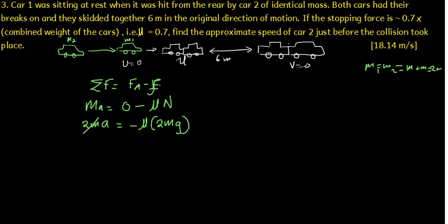Notice that the 2M and the 2M there cancels. And so acceleration will just be equal to negative mu. They have given us 0.7, G is 9.8, and so the acceleration is going to be equal to 0.7 multiplied by 9.8, and that is negative 6.86 meters per second squared. This is the acceleration at which they were moving, so they were retarding.